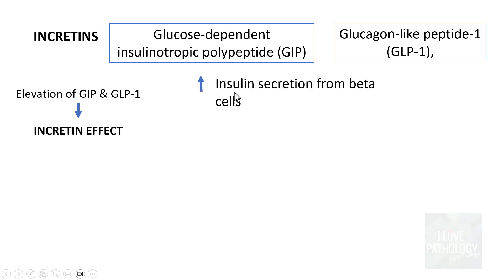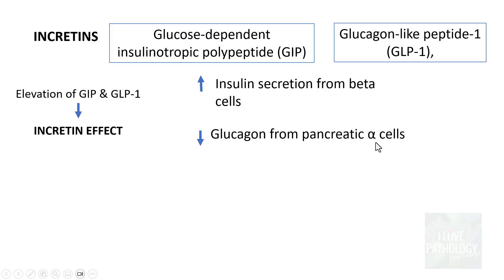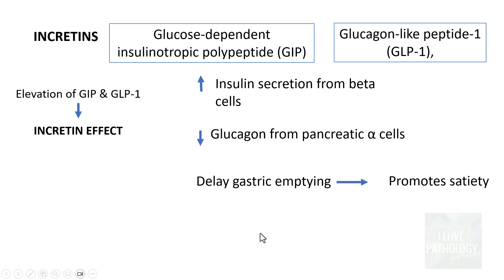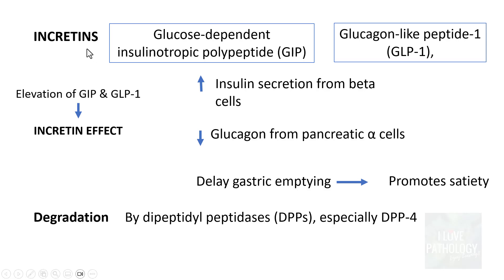The incretin effect results in increasing the secretion of insulin from the beta cells and also decreasing glucagon from the pancreatic alpha cells. Incretins also delay gastric emptying, which promotes satiety. These incretins are degraded by dipeptidyl peptidases, DPPs, especially DPP-4.